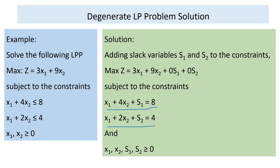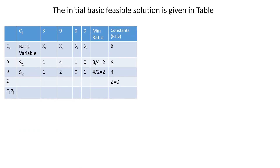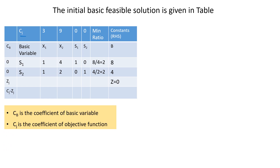The constraints become equalities after adding s1 and s2. The slack variables are added to the objective function with zero coefficients. Now let's establish the initial basic feasible solution table. The basic variables are s1 and s2. Here cj is the coefficient of the objective function, and cb is the coefficient of the basic variables. The table shows the constraint coefficients including slack variable coefficients, and the right-hand side values.